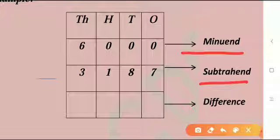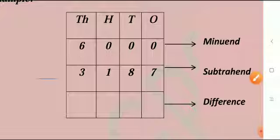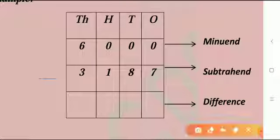Now we first subtract the ones, but for that we first try to regroup the tens and ones as we cannot subtract seven ones from zero ones. But as there are zero tens and zero hundreds, we regroup the thousands, hundreds, tens, and ones.